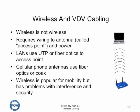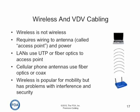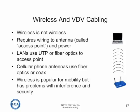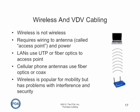But wireless isn't truly wireless. What wireless does is replace the patch cord that typically connected the user into the network. It still requires wiring to an antenna — which in WiFi terms is called an access point — and it also requires power to the access point. Local area networks use UTP or fiber to connect the access point, and cellular phone antennas use either fiber optics or coax, typically. While wireless is popular for mobility, it has problems with interference and security, and those are being well addressed by current technology.